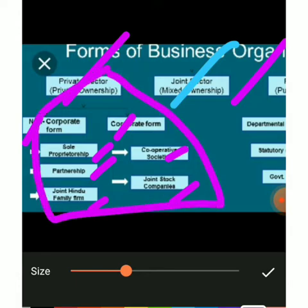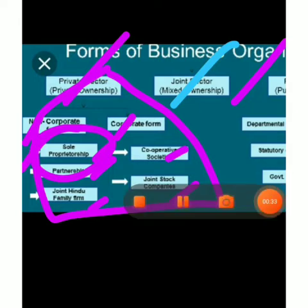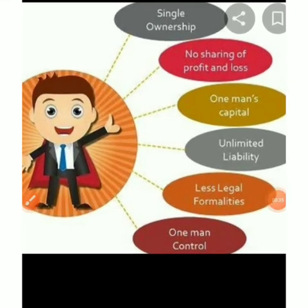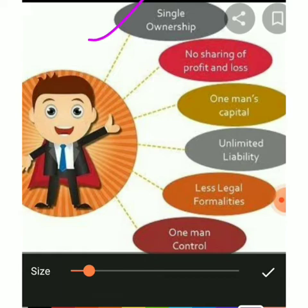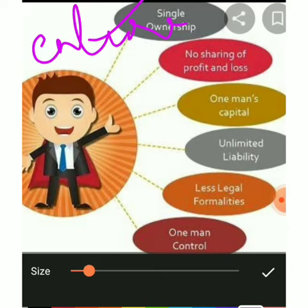Now let's look at the characteristics of sole proprietorship. First is single ownership — ownership by one man, owned by a single person. The title is 'Proprietor.' The sole trader contributes all the capital. He is not only the owner of the business but also the manager of the entire affairs. So single ownership means one person controls everything.